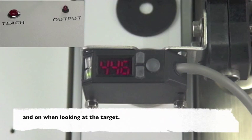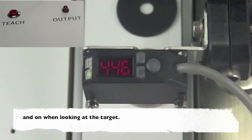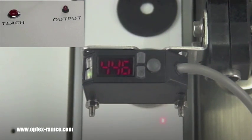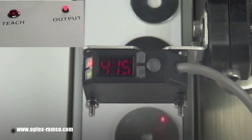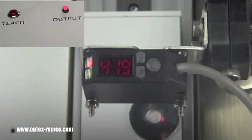So when the sensor is looking at the background material, the output will be off when you're in light on mode, and when the sensor is detecting a target, the output will be on.